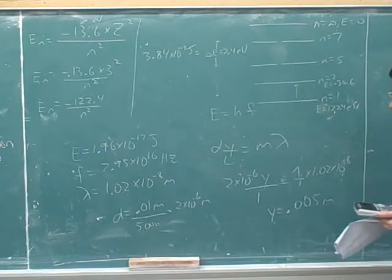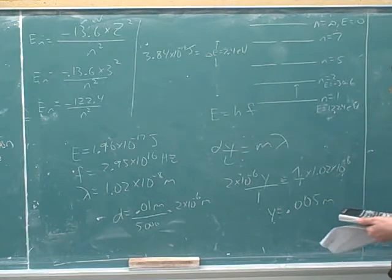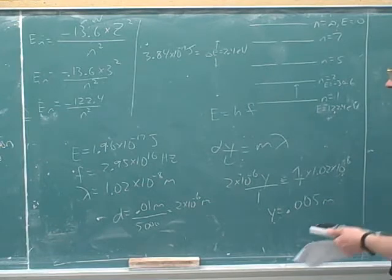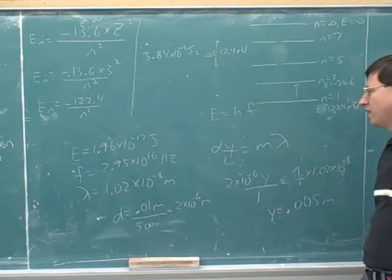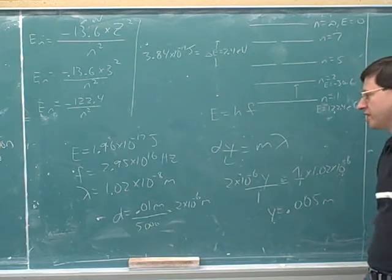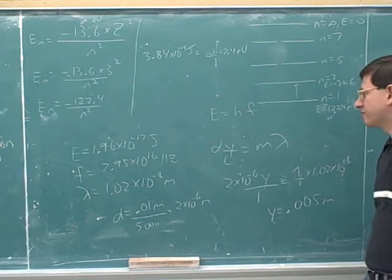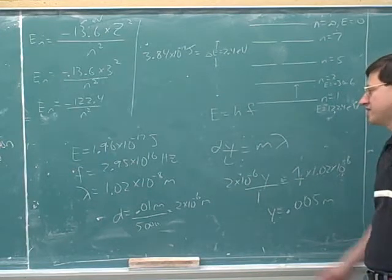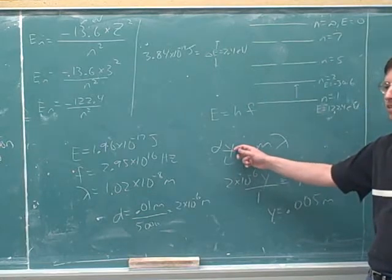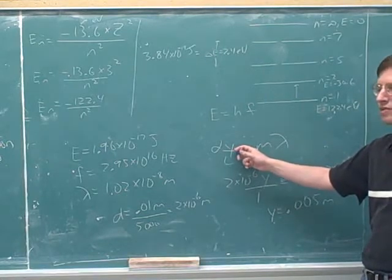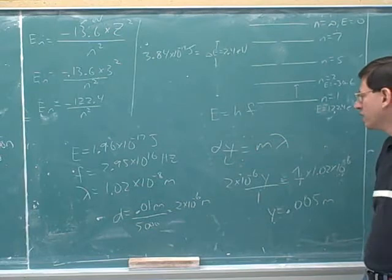Oh, we're really breezing through this. So how do you know you can use the small angle approximation? Well, I think we talked about just as a problem-solving trick: if the problem is dealing with vertical distances, they probably want you to use this formula. And if the problem is dealing with theta, they probably want you to use the other.